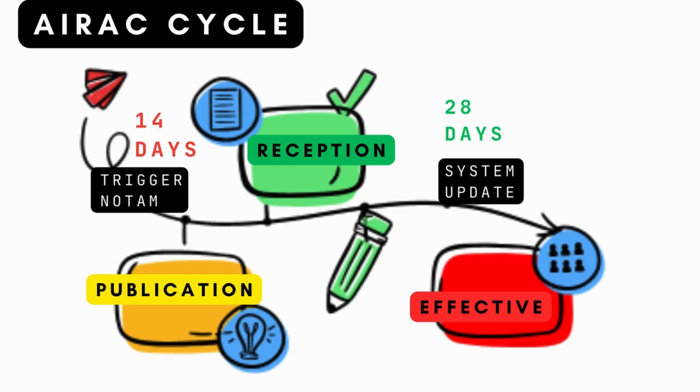The effective date is when changes take effect. 28 days before the effective date, users are expected to make necessary updates in their database or software.